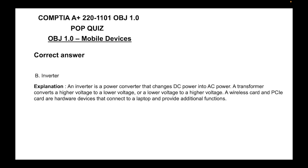The correct answer is B, inverter. An inverter is a power converter that changes DC power into AC power. A transformer converts voltage higher to lower or lower to higher. A wireless card and PCIe card are hardware devices that connect to a laptop and provide additional functions.